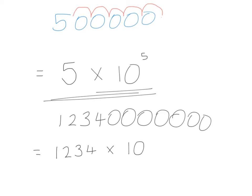Step 2 is I'm going to put a decimal point in between the first and the second number. All I need to do now is count in from the end how many spaces I've had to move to get to this point. Counting the spaces: 1, 2, 3, 4, 5, 6, 7, 8, 9, 10. So it'll be 1.234 times 10 to the power of 10.